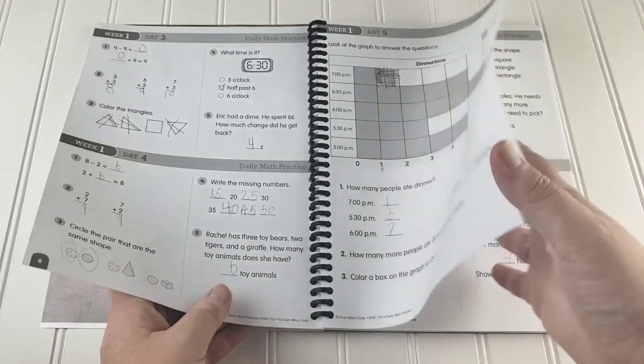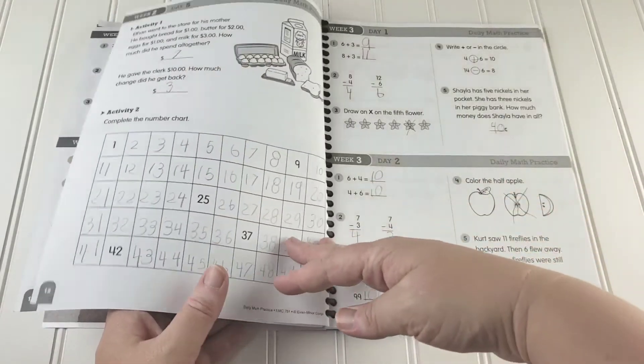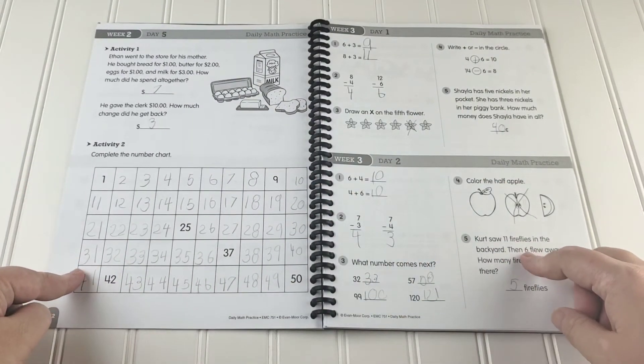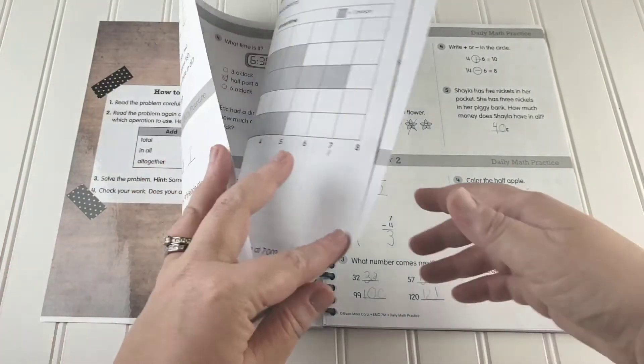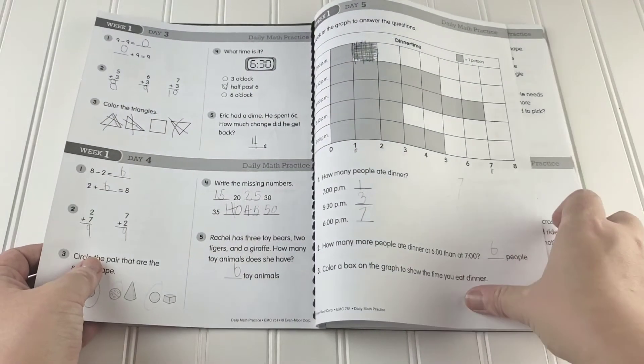So it's normally a little bit more intense thing, but there's less questions. You can see here there was only two activities. She enjoys that it's short and sweet.